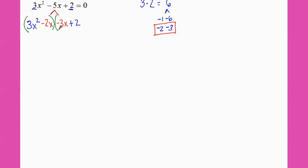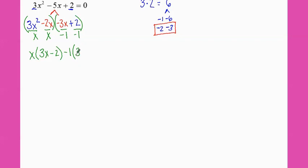Group the first two and group the second two. These two both have an x in common, giving x times three x minus two. Since my first number is negative, I know I'm going to divide by a negative one. Negative three divided by negative one is positive three x, and positive two divided by negative one is negative two. So my factors are three x minus two and x minus one.